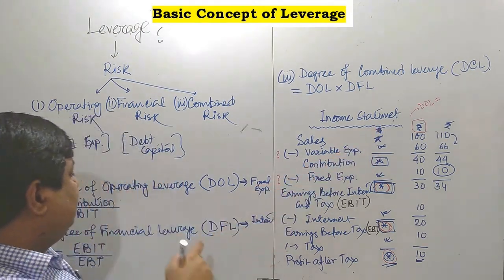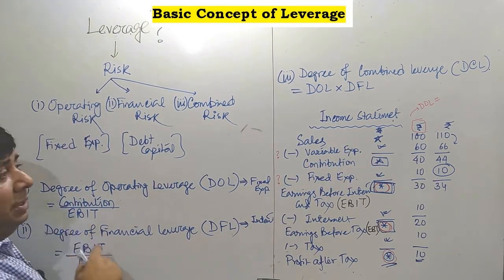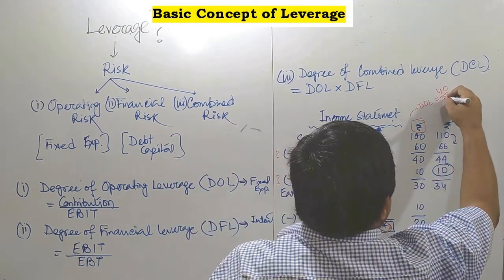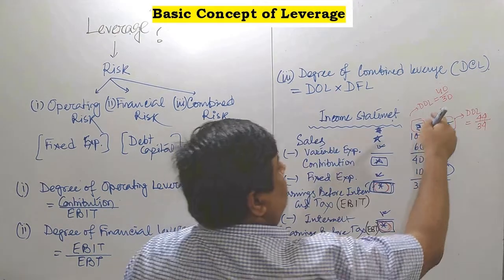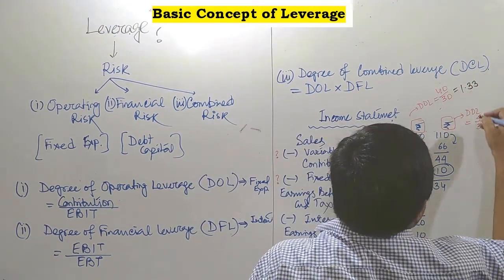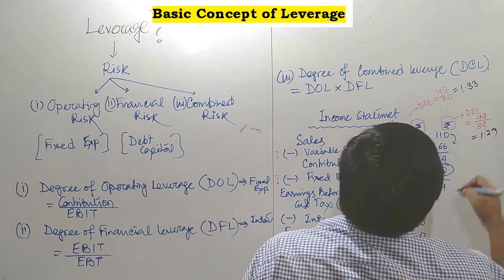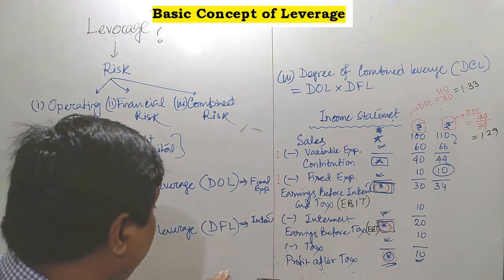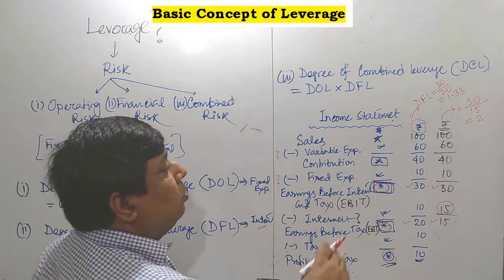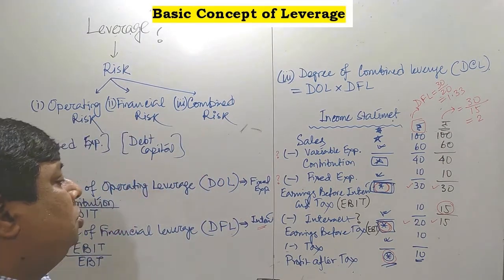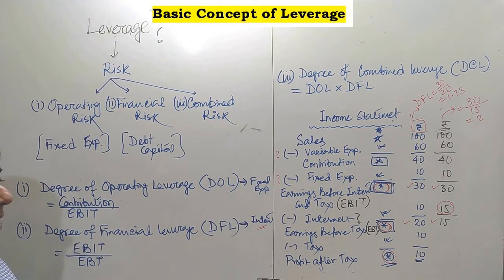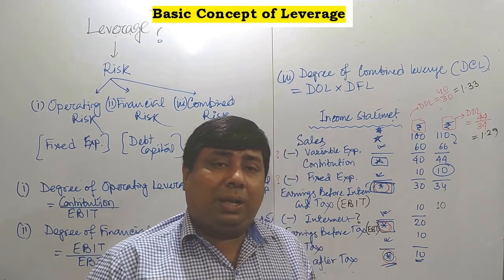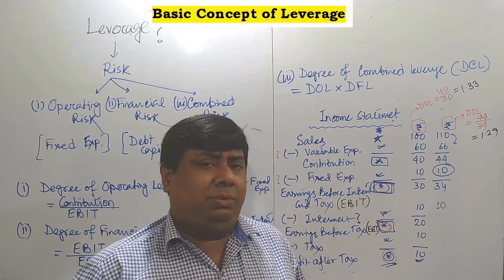Suppose in the first case the DOL formula is contribution by EBIT. Your contribution is 40 and EBIT is 30 — so it is simply 40 divided by 30, which gives 1.33. In the second case, 44 divided by 54 gives 1.29. If you pay more and more interest, your financial leverage will go up. Financial leverage is directly proportionate to interest, which arises from loan capital. Whatever capital we collect from the market as a loan, we have to pay a certain amount of interest, making it one kind of burden on our income statement.